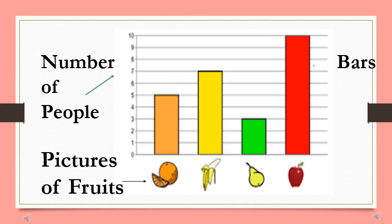Now let me explain what is happening here. These fruits are here because we all like different fruits. We have an orange, a banana, a pear, and an apple.